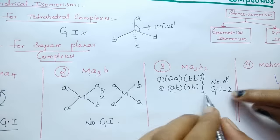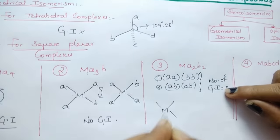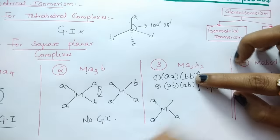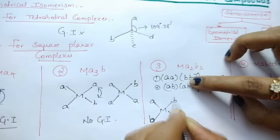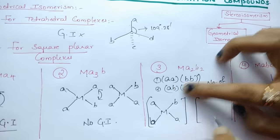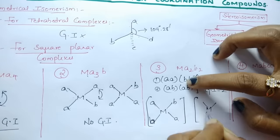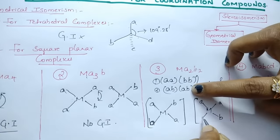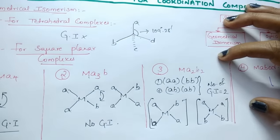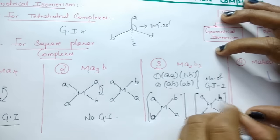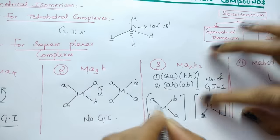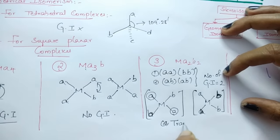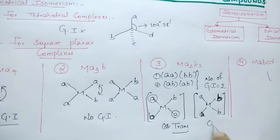How many GIs are possible? 2. What are those 2? In the first combination: AA — A opposite to A, and B opposite to B. Both same ligands are opposite to each other, so this is trans. In the second combination, both A and B are side by side, so it is cis. Two isomers are possible.